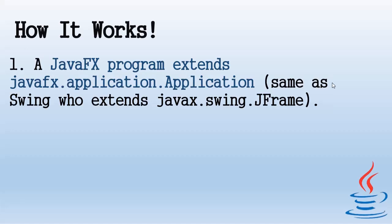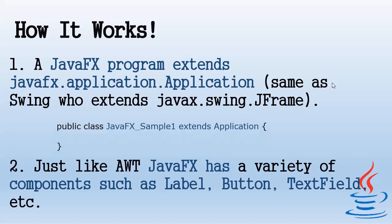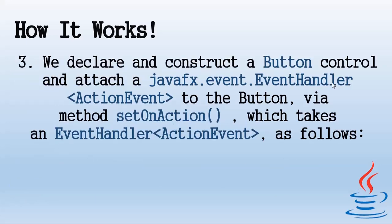So how does it work? Number 1: a JavaFX program extends javafx.application.Application. This is similar to Swing, which extends javax.swing.JFrame. Number 2: just like Abstract Window Toolkit, JavaFX has a variety of components such as Label, Buttons, TextFields, etc. Number 3: we declare and construct a Button control and attach a javafx.event handler to the button via the method setOnAction.